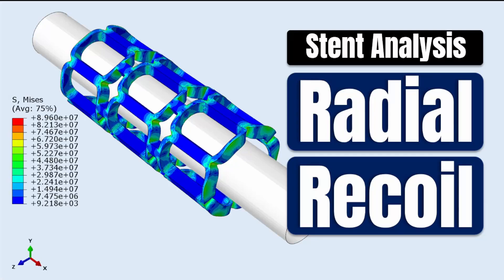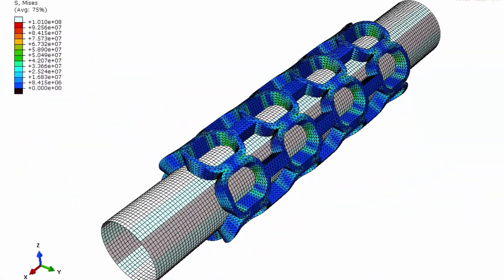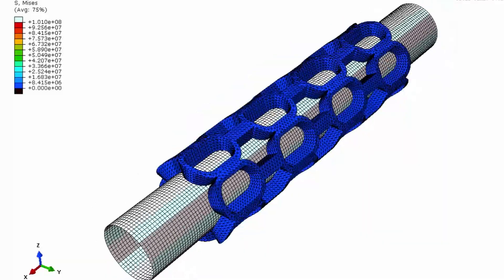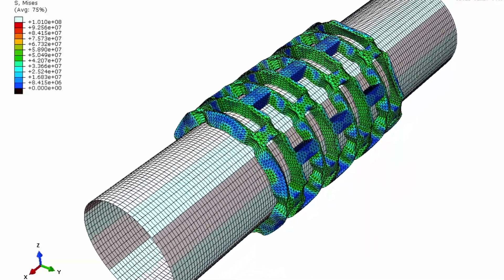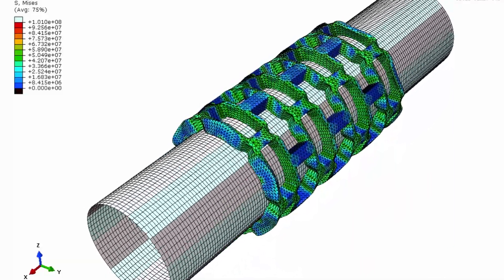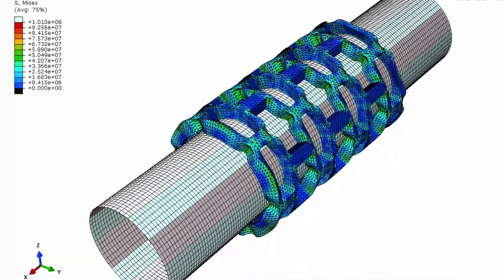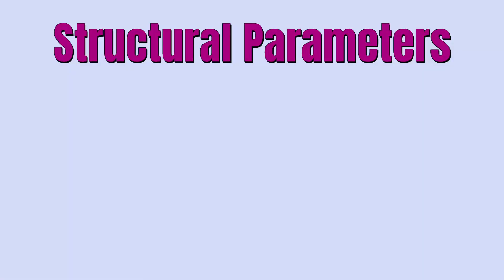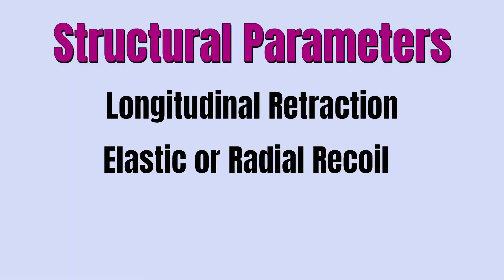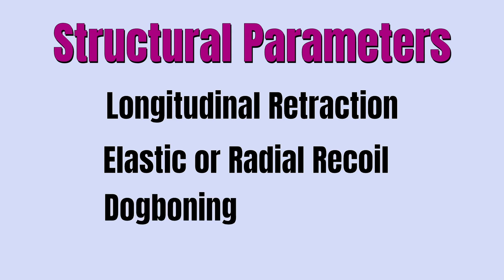When you want to model a stent, one of the things you often need is to extract objective data that characterizes the structural behavior of such a stent. Structural parameters can include things like longitudinal retraction, elastic recall, duck booting, or foreshortening.